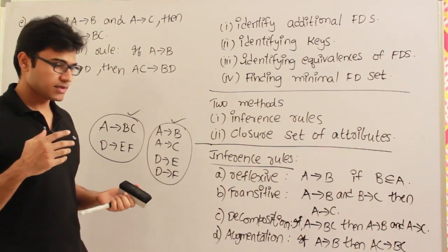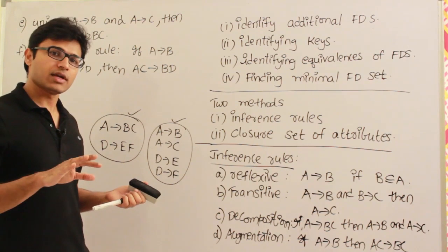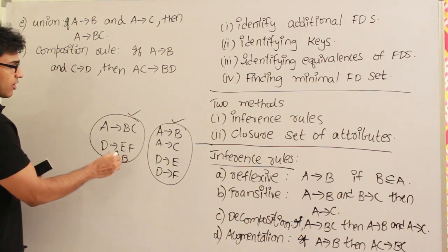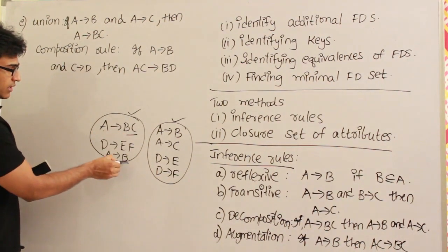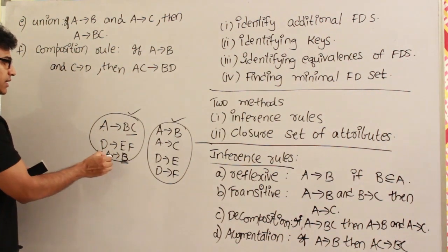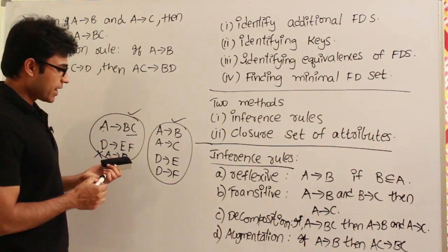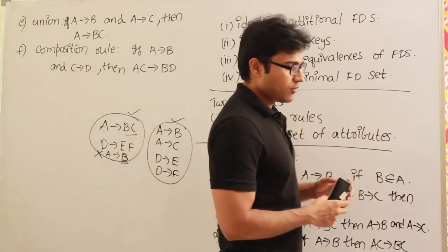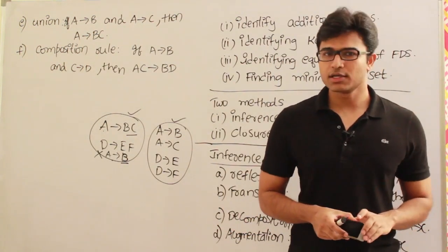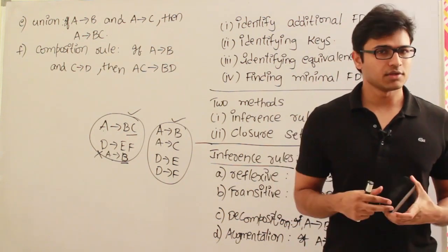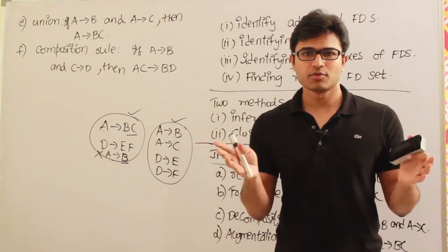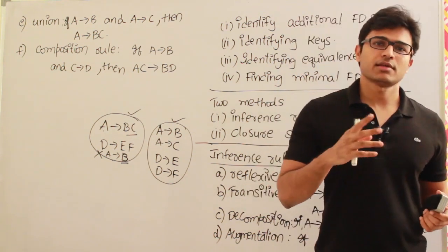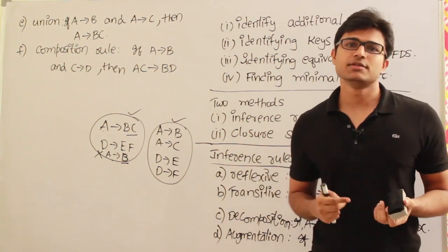For example, one set containing {A → BC, D → EF} is equivalent to another set containing {A → B, A → C, D → E, D → F}. Even though they look completely different, they are actually the same. Next, we want to find the minimal FD set — sometimes an FD is redundant. For example, if A → BC already exists and we also have A → B, that second FD can be deleted. We want to identify and remove such redundancies. All of this is done before normalization, which is the process of decomposing tables.